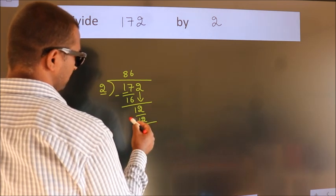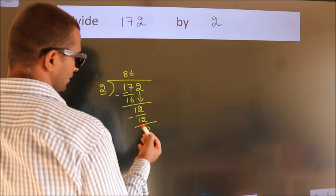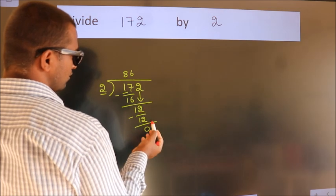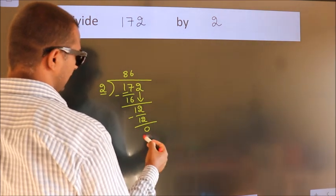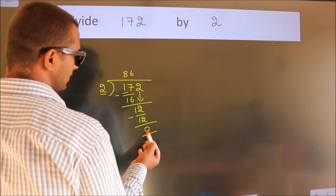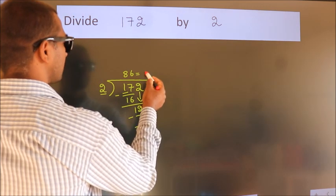Now we subtract. We get 0. After this, no more numbers to bring it down. And we got remainder 0. So this is our quotient.